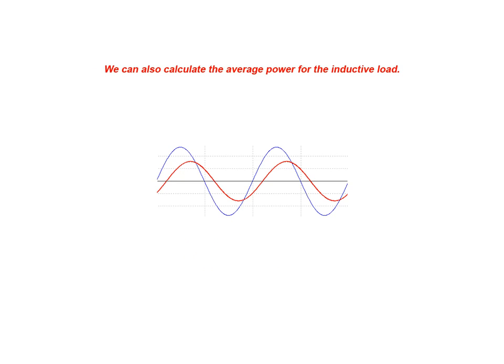We now move on to calculate the average power for the inductive load circuit. The true power being dissipated by this circuit is equal to 6.54 watts.